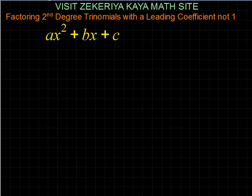Hi everybody. In this video I will try to teach you factoring second-degree trinomials with a leading coefficient which is not equal to 1. If there is a leading coefficient, to get this kind of expression I need to have the product of two binomials.